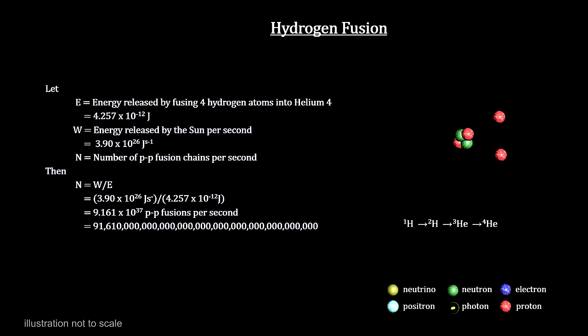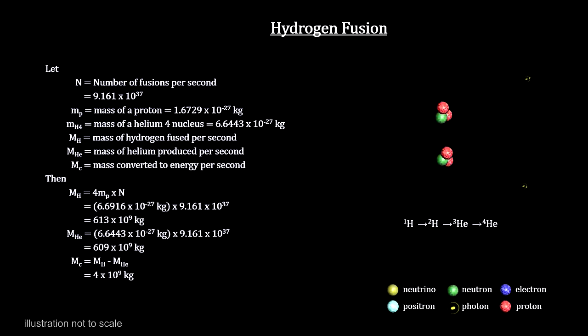But by measurement, we know that the sun produces 3.9 times 10 to the 26 watts. To produce this amount of energy, it would take a tremendous number of these fusion events every second. We calculate that 613 million metric tons of hydrogen fuse to form 609 million metric tons of helium, converting 4 million metric tons of matter into energy every second.